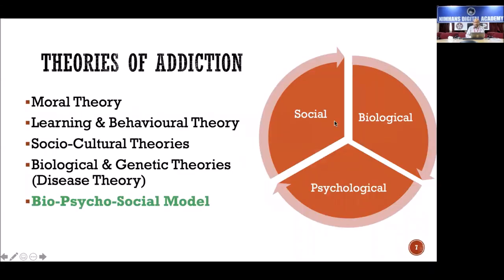Looking at addiction from different perspectives, there are many theories. At the beginning there was the moral theory — addiction is bad, people with bad nature get addicted. It evolved over time, and at this point the best understanding of addiction is a combination of three models: bio, psycho, and social. All three models contribute to our current best understanding of addiction.